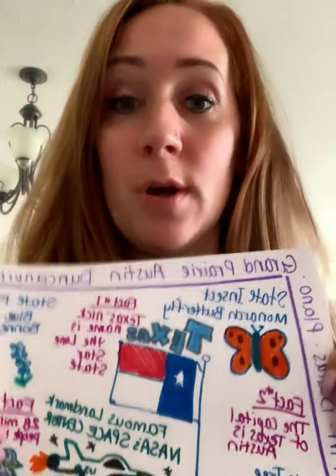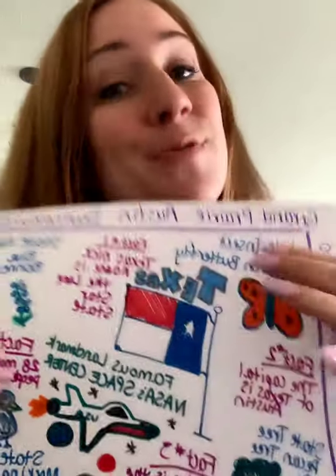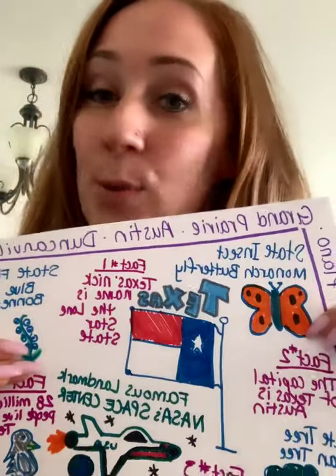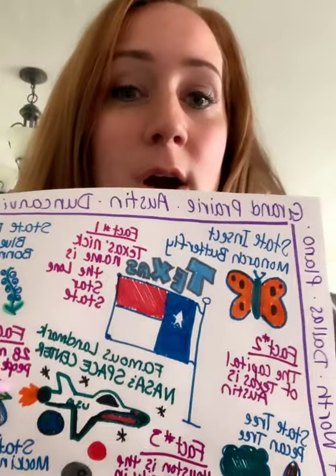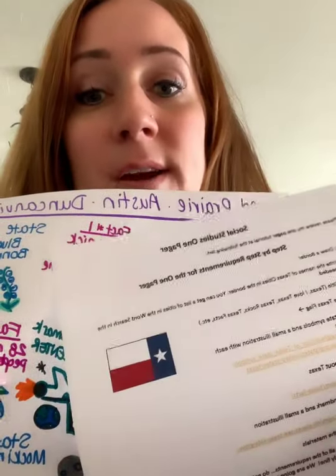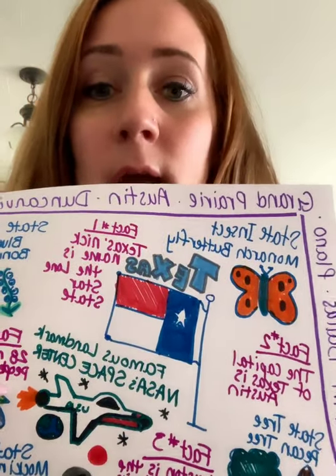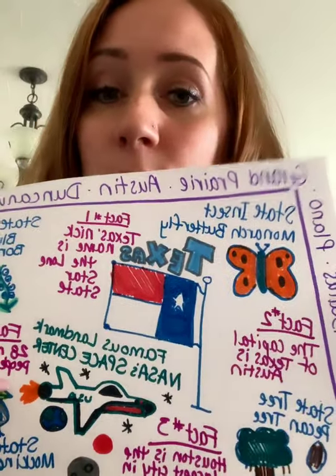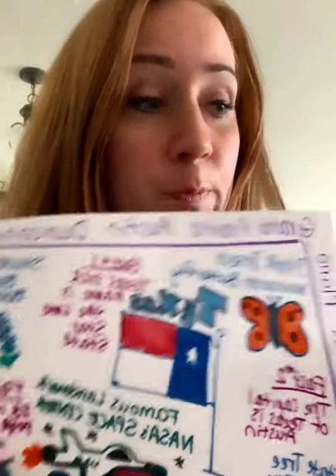Step number four: draw the Texas flag. Now, Ms. Friesen made a little mistake — the red is supposed to go at the bottom, but that's okay. You have a copy or a picture of the Texas flag right here, so you can use that. Draw your Texas flag. I chose to put a little flagpole, but you don't have to. It's up to you.